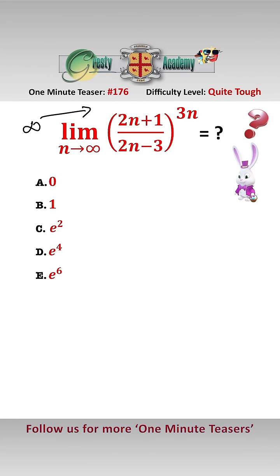Putting infinity into here just gives us infinity over infinity to the power of infinity, which isn't very helpful. So what we're going to do first is we will find the limit of the log of this, and then the limit we seek is e to the power of that limit.